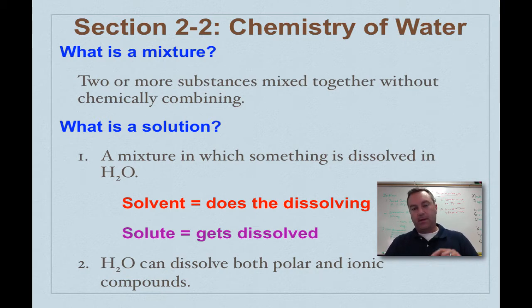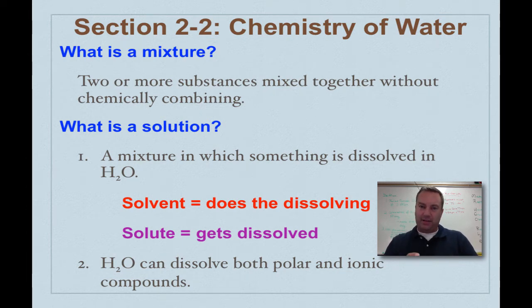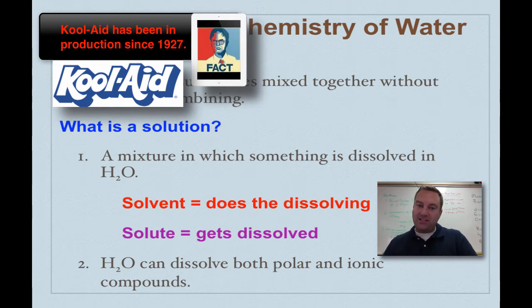As you see down here in red, solvent is the substance that does the dissolving. Think of it as like a liquid. If you were to make Kool-Aid, the water that you would put the Kool-Aid powder and the sugar in, that's going to be the solvent. Now the solute, that's the stuff that gets dissolved. So in our example of Kool-Aid, think of the Kool-Aid powder and the sugar—those are the solutes.